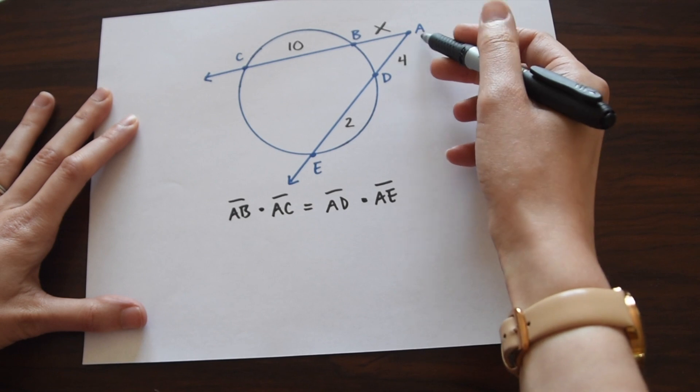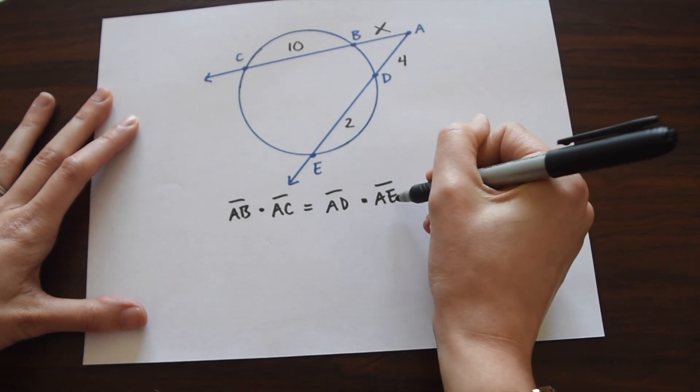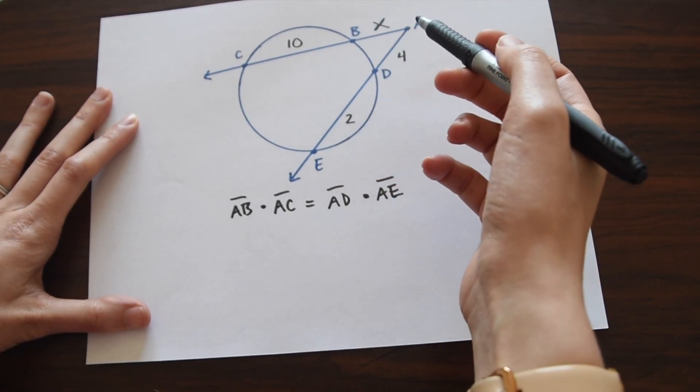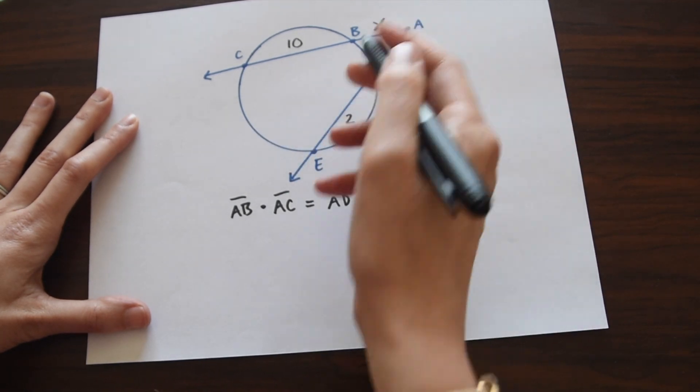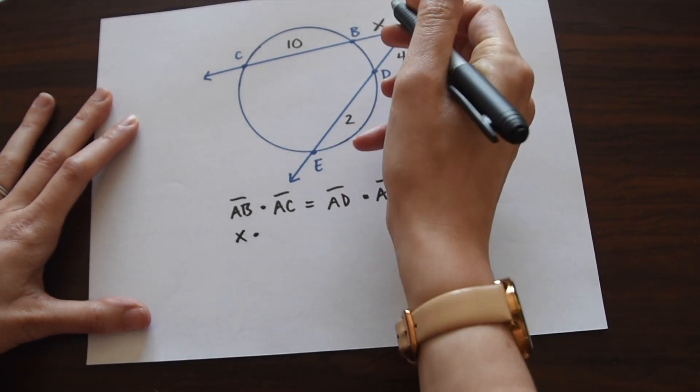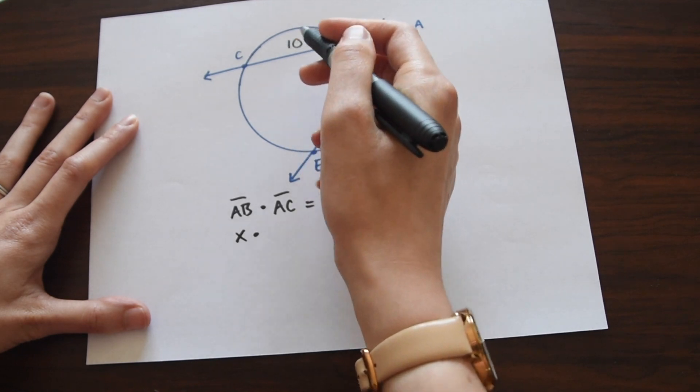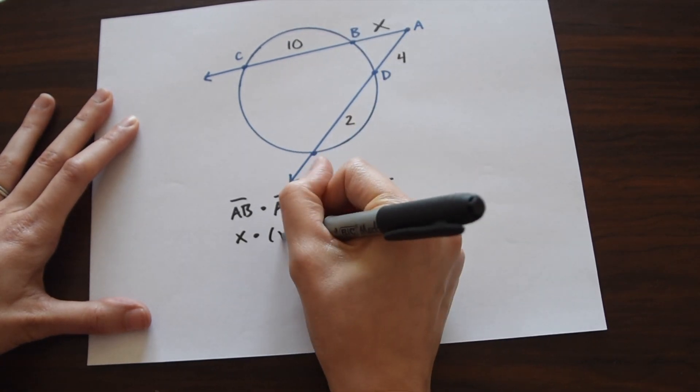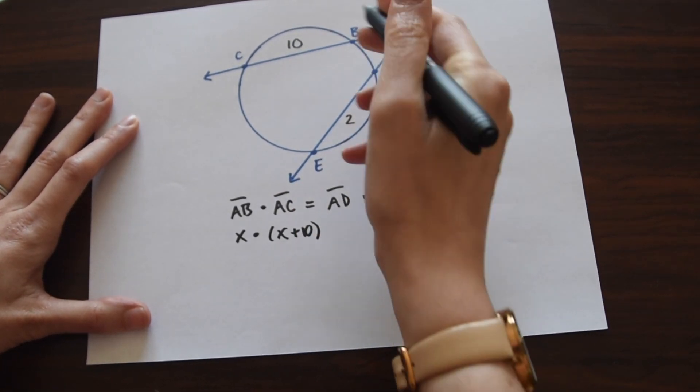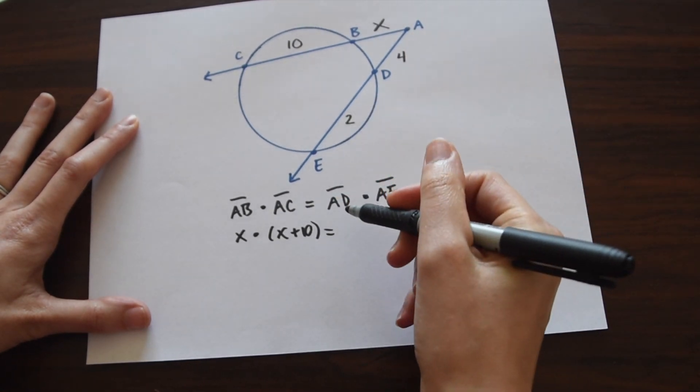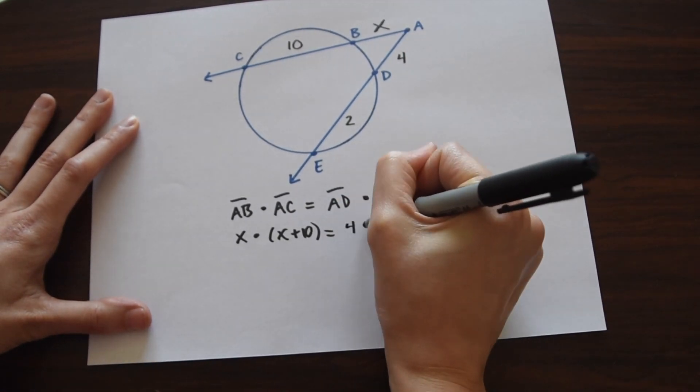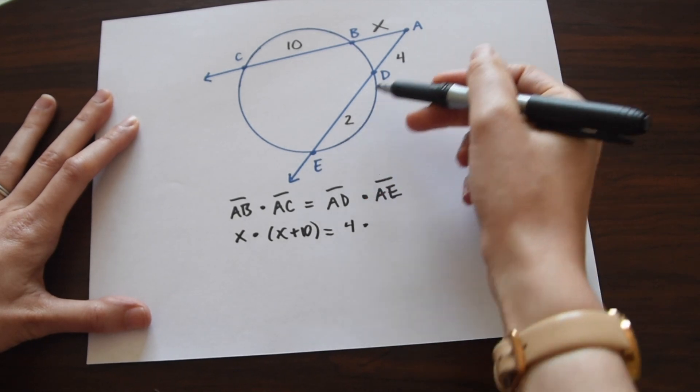So what we want to do here is now just fill in our formula. So AB is X times AC. So if you notice, AC, we just need to add X plus 10. That's the value of this whole entire length. And now this is equal to AD, which is 4, times AE, which is just going to be 4 plus 2, which is 6.